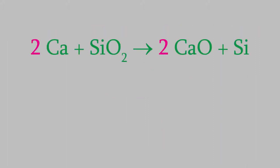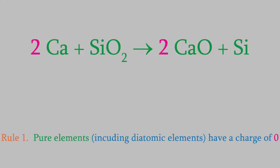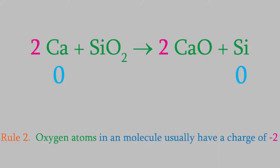So, back to our redox reaction. Let's use the rules we just talked about to find the charge on each atom in the reaction. Rule 1 tells us that any pure element has a charge of zero. So the calcium on the left and the silicon on the right have a charge of zero. Rule 2 tells us that any oxygen in a molecule will have a charge of minus 2. So that takes care of all of our oxygens.